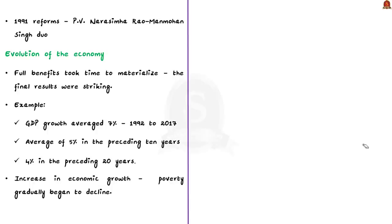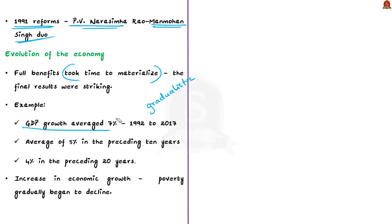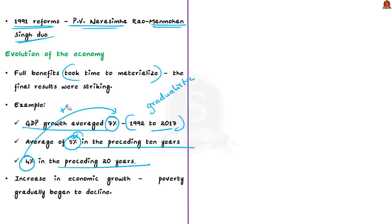The 1991 reforms came during the period when P.V. Narasimha Rao was Prime Minister and Dr. Manmohan Singh was Finance Minister. India adopted a gradualistic approach to the benefits of liberalization. GDP growth averaged 7% in the 25 years from 1992 to 2017, whereas in the preceding 10 years it was only 5%, and the preceding 20 years it was 4%. We have seen an increase in economic growth, and with that, poverty gradually began to decline. However, sectors like health, education, and environmental concerns were not given adequate recognition, and reforms in labor and land are still pending.